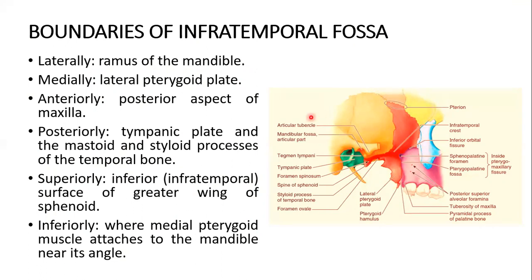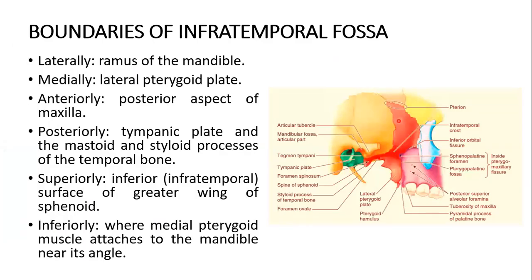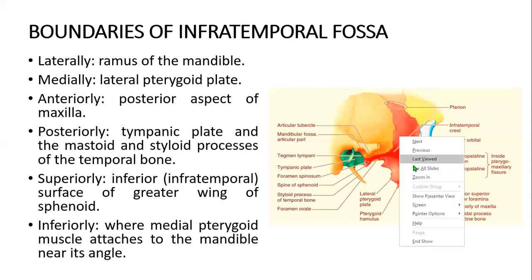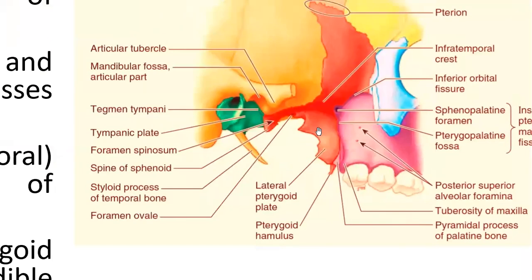The lateral boundary is the ramus of the mandible. Medially is the lateral pterygoid plate — this is the lateral pterygoid plate, part of the pterygoid process of the sphenoid bone.